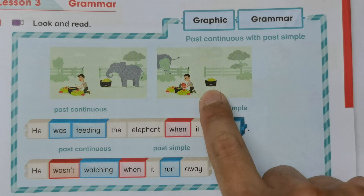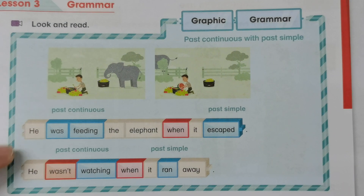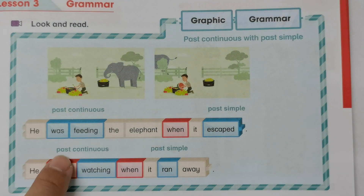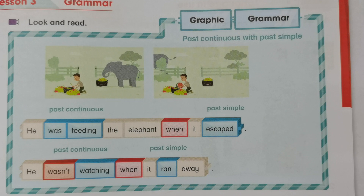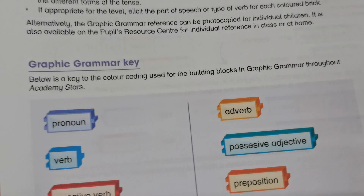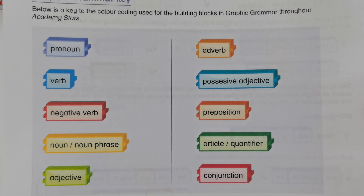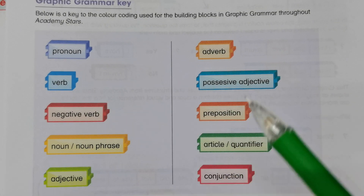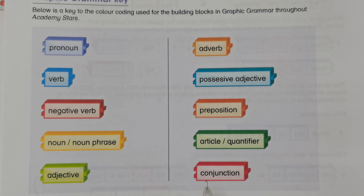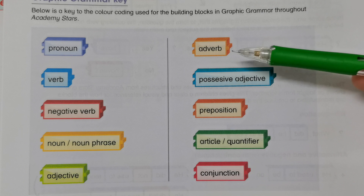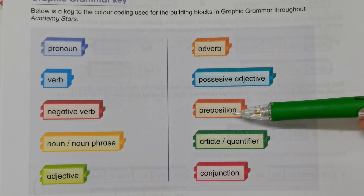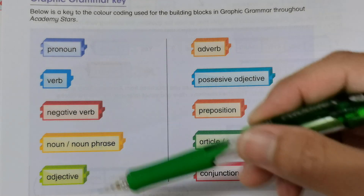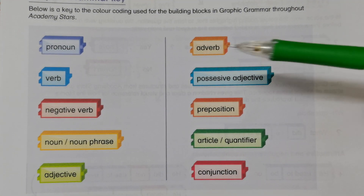In the pupils book you will see the graphic grammar. There are two pictures here — the first sentence refers to one picture and the second sentence to the other. If you look at the colors, there are a few graphic grammar keys. The colors may look similar for the negative word, conjunction, adverb, and preposition, so you will need to differentiate them yourself.